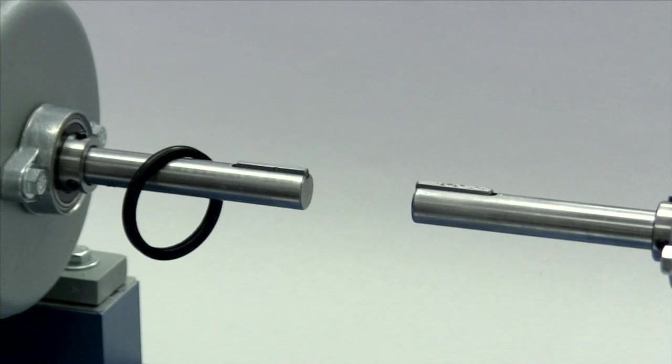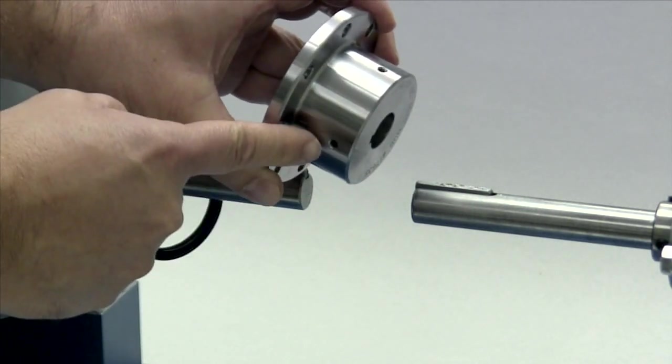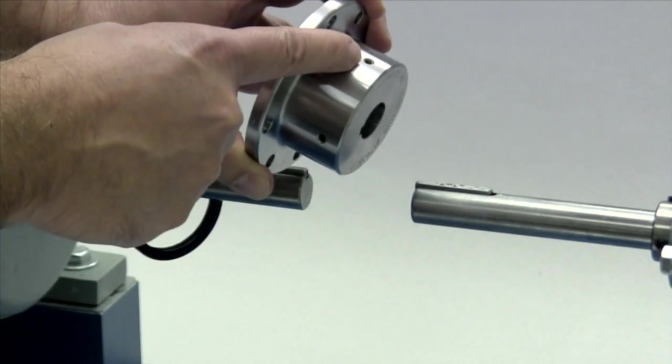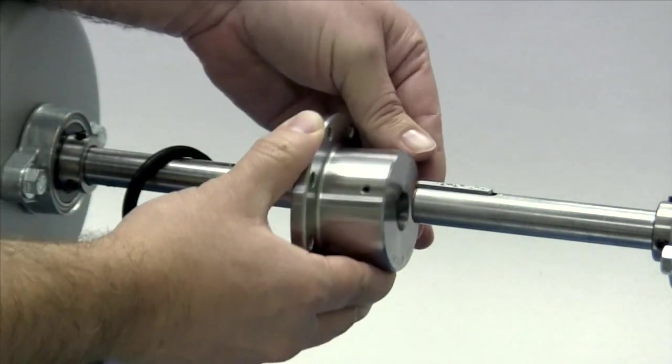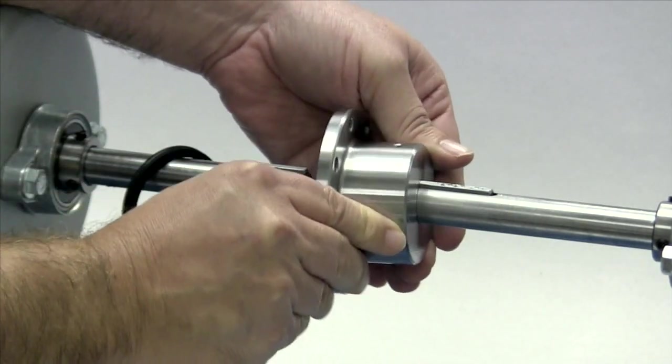Please note that the Lovejoy grid hubs sizes 1020 through 1090 are manufactured with two set screws and a clearance or slip fit. These hubs should slide onto the shafts with little or no difficulty.